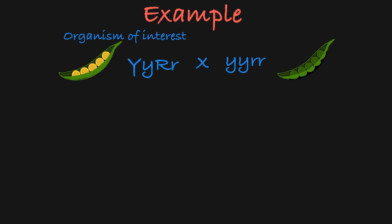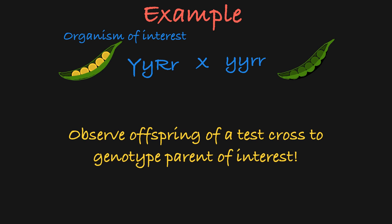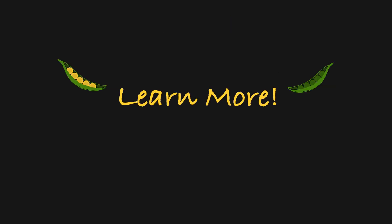So as you can see, just by observing the offspring of a test cross, you can determine the genotype of the parent with a dominant phenotype. That was an example of a two gene test cross. If you'd like to learn more, see my videos on dihybrid crosses or pedigrees.